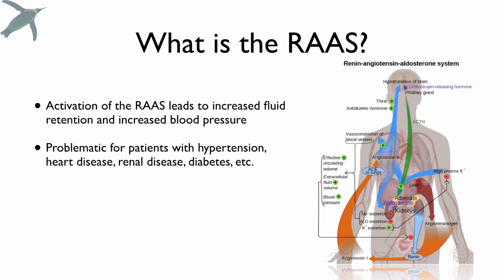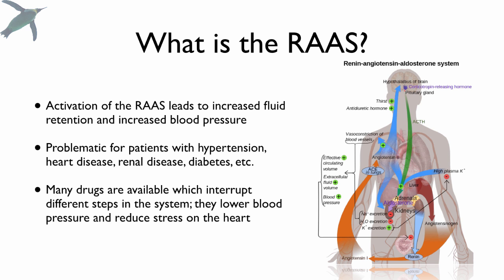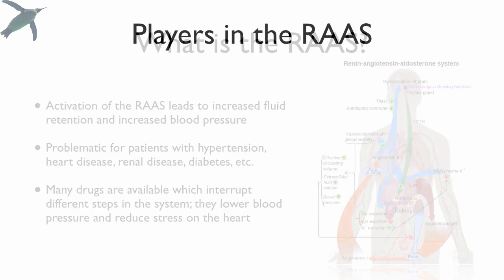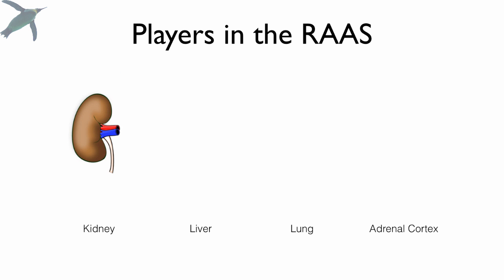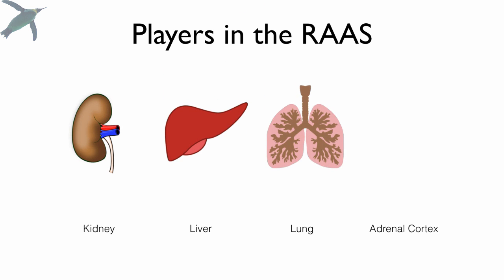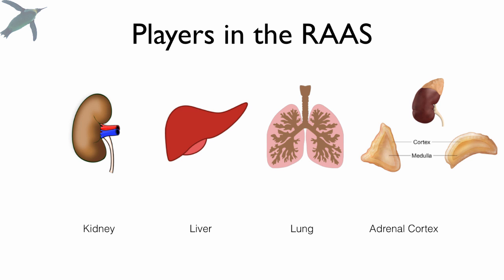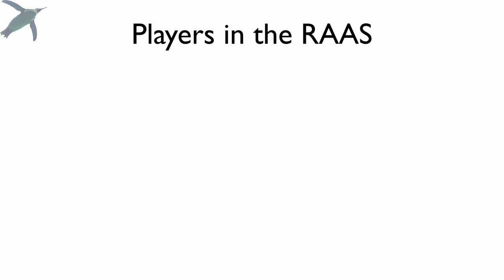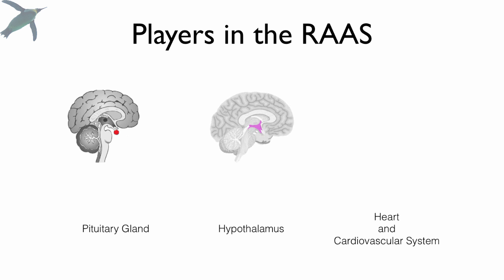This is problematic for patients dealing with hypertension, heart disease, renal disease, complications due to diabetes, et cetera. Many different drugs affect various aspects of this system, and we're going to understand how you can take out different steps along the pathway. Collectively, these drugs will lower blood pressure and reduce stress on the heart. The players in this system include the kidney, the liver, the lung, the adrenal cortex, the pituitary gland, the hypothalamus, and the heart and the cardiovascular system as a whole.